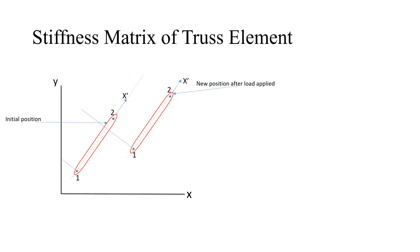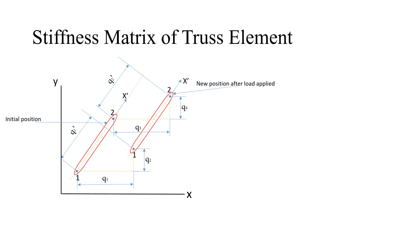After the application of load with respect to the X dash direction, node 1 will displace by distance q1 dash and node 2 will displace by distance q2 dash. So q1 dash and q2 dash are the displacements of node 1 and 2 respectively with respect to the X dash direction, that is locally. If we consider it with respect to the global coordinate system, each node will have 2 degrees of freedom. Node 1 displaces by q1 in X and q2 in Y; node 2 displaces by q3 in X and q4 in Y.